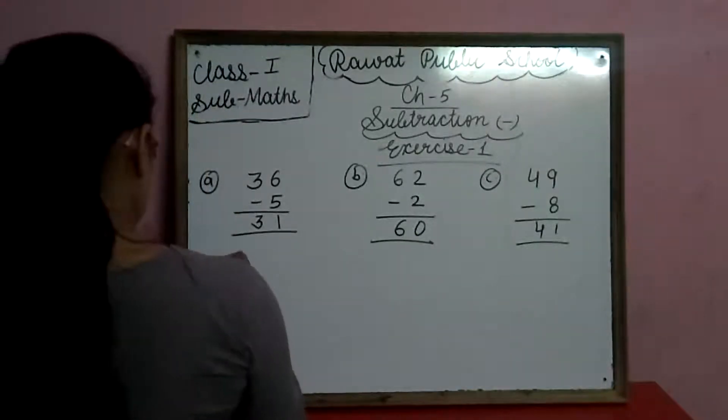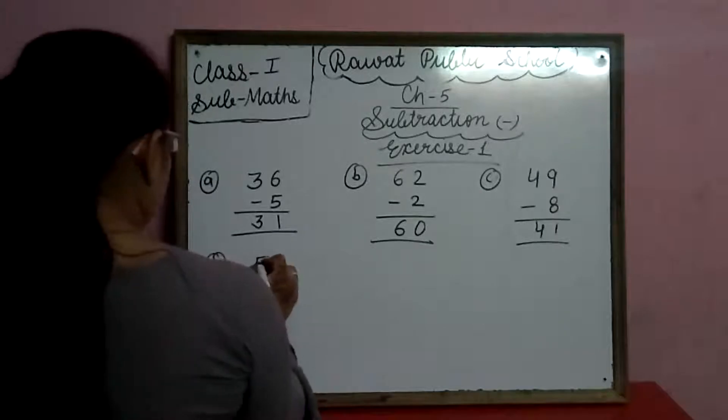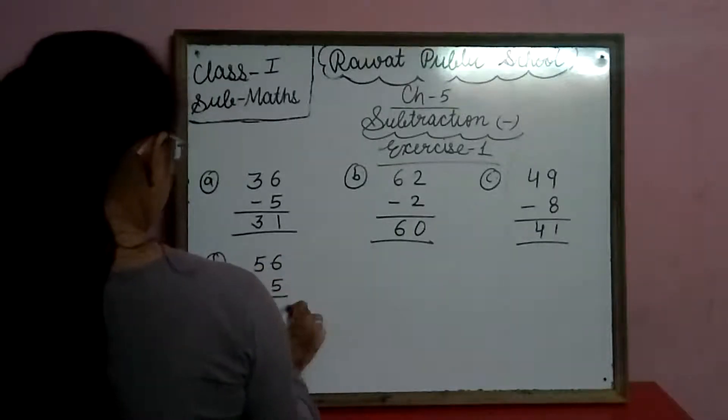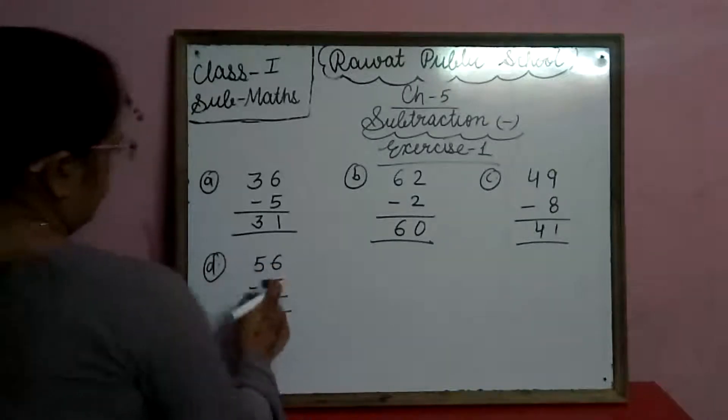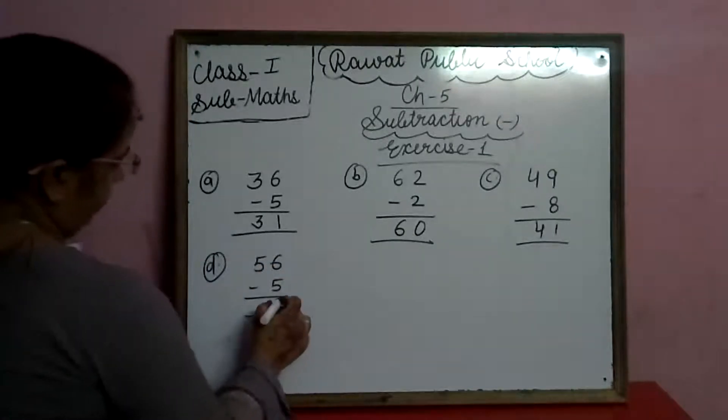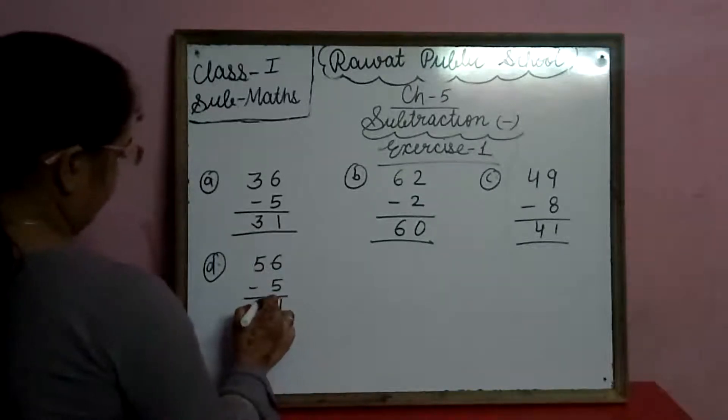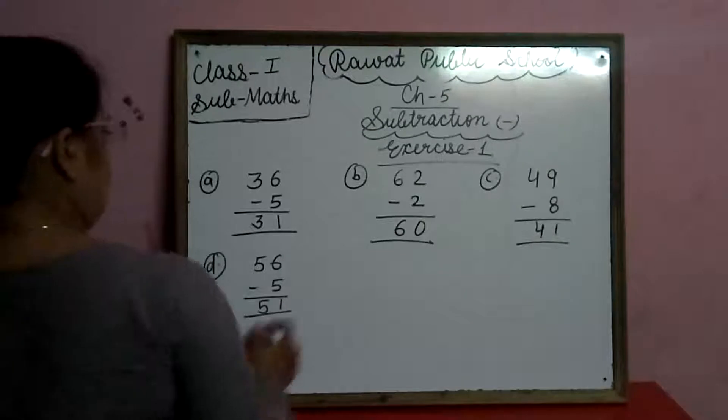D. 56. Yese humi minus 5 karengo. 6 mene se 5 jayega, toh one. 5 ki niche koi digit nahi hai, toh hum 5 as it is.